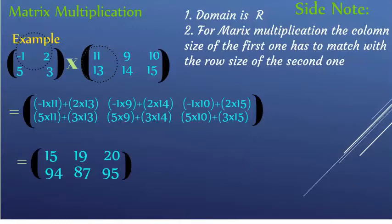That is what matrix multiplication is. Notice: minus one times eleven plus two times thirteen — that is the first coordinate. Second coordinate: minus one times nine plus two times fourteen. Third coordinate: minus one times ten plus two times fifteen. Then you do the same thing for the next row using five and three to find the remaining entries.